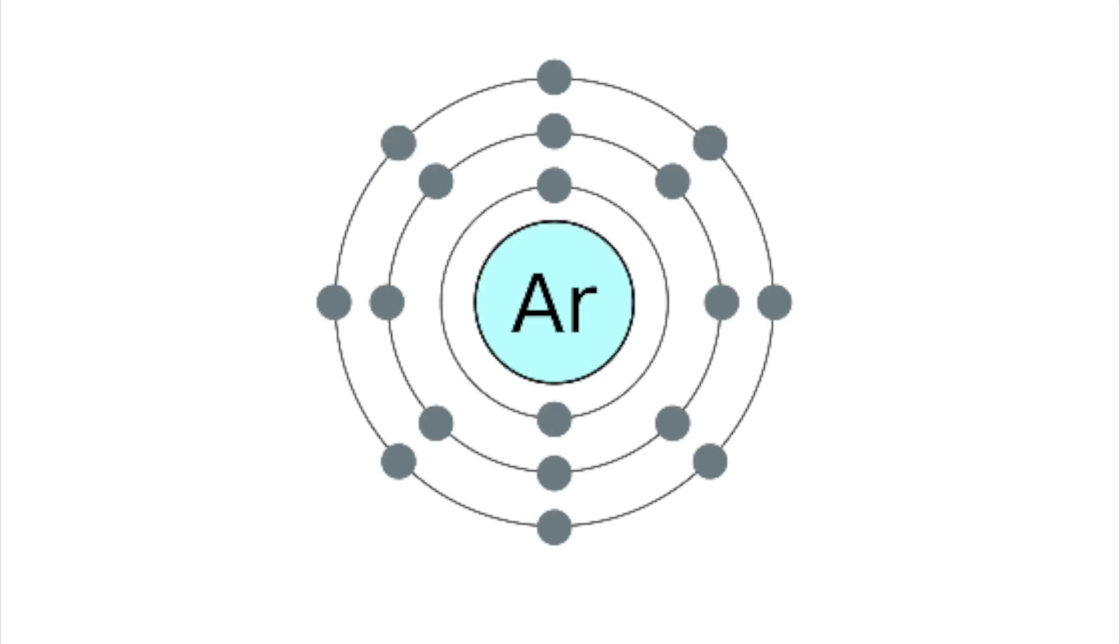In this case there is now one more electron than proton so it becomes negatively charged by minus 1. The formula of chlorine ion is now written as Cl minus and its structure is 288.